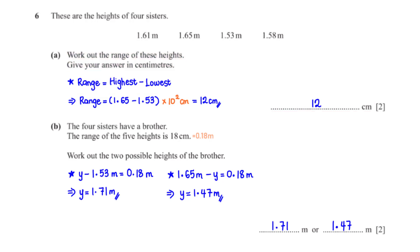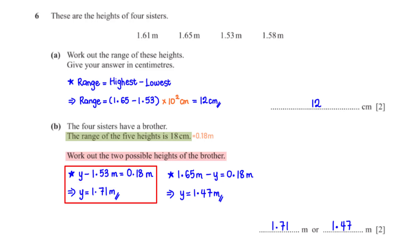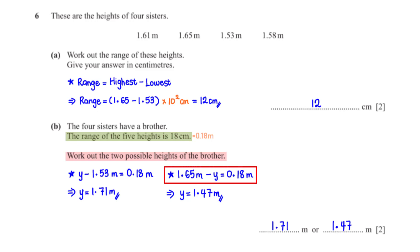The four sisters have a brother whose height gives a range of 18 centimeters. Work out the two possible heights of the brother. Since the range is 18 centimeters, which is 0.18 meters, the brother's height y could be the highest or the lowest. If highest: y minus 1.53 equals 0.18, giving 1.71 meters. If lowest: 1.65 minus y equals 0.18, giving 1.47 meters.